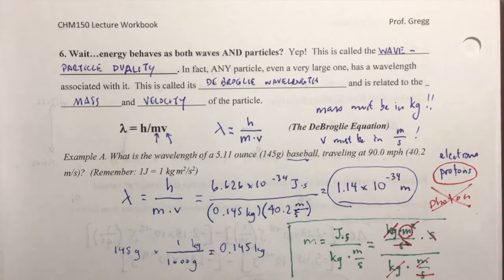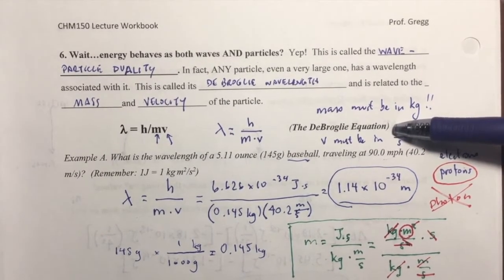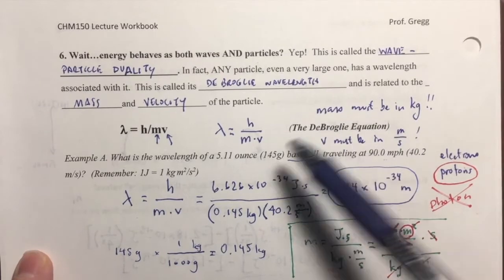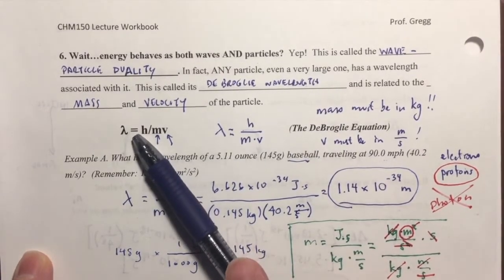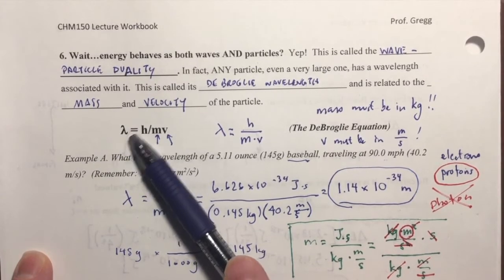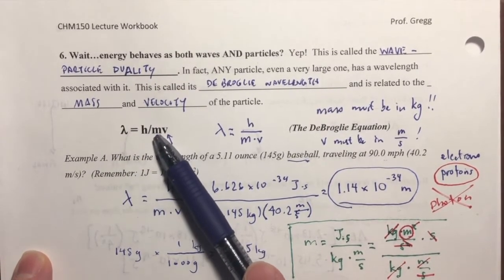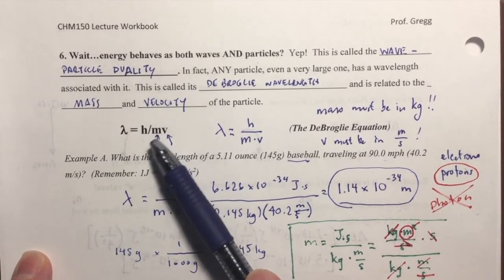Welcome back, students. In our previous video, I covered how the de Broglie equation allowed us to consider both the wave nature of an electron or a particle, such as an electron, and its particle nature because it has mass and velocity.